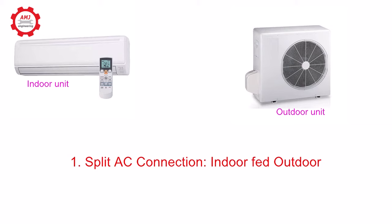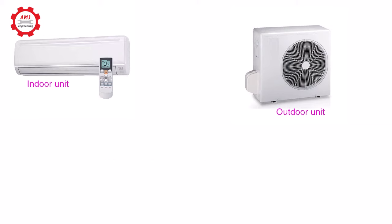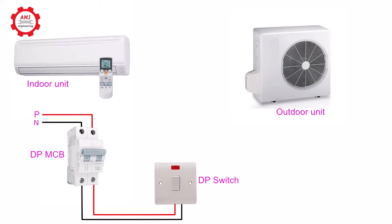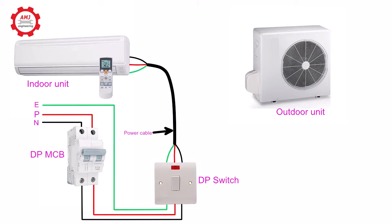The connection diagram is as below. First, the power supply comes from the main distribution board and goes to the double pole MCB. After the MCB, the supply goes to the double pole switch. After the switch, the power cable of the air conditioner starts. The power cable of the air conditioner contains three wires: phase wire, neutral wire, and earth wire.